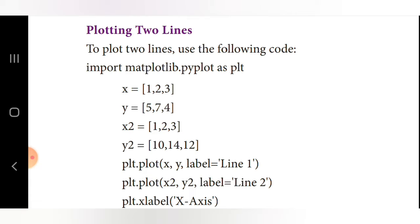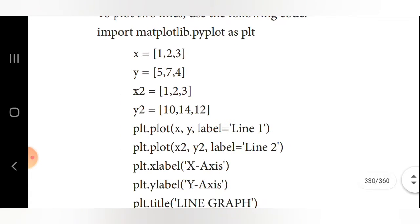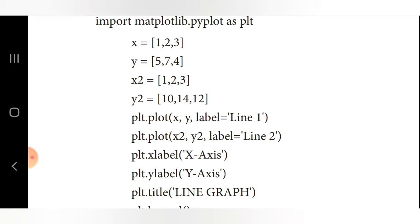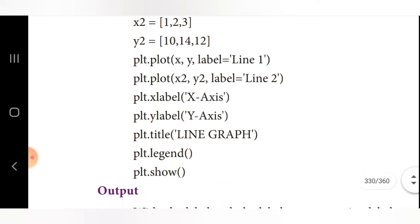We call plt.plot(x, y, label='Line 1'). The label parameter gives the name of that particular line. Then for the second line: plt.plot(x2, y2, label='Line 2'). We use plt.xlabel and plt.ylabel to set the names of the x-axis and y-axis. plt.title sets the chart title as 'Line Graph', plt.legend displays the legend, and plt.show displays the chart on screen.